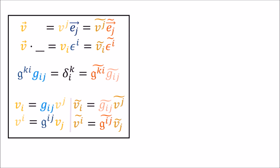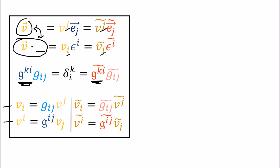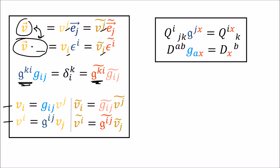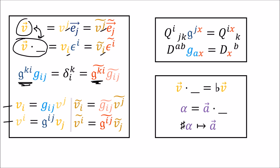To sum everything up: we created vector co-vector partners by pairing vector v with v dot something. The vector component index goes upstairs on the vector and downstairs on the co-vector. We learned the definition of the inverse metric tensor, and how the ordinary and inverse metric tensors lower and raise indexes respectively. These operations apply to tensors of any size. Finally, we learned the flat and sharp operator notation for converting between vector and co-vector partners.